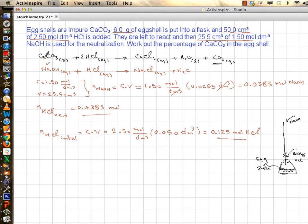Now if you subtract these two numbers then you know exactly how much HCl was used for calcium carbonate only. So moles of HCl used in first reaction or for CaCO3 is simply 0.125 minus 0.0383, which happens to be 0.0867 moles HCl.